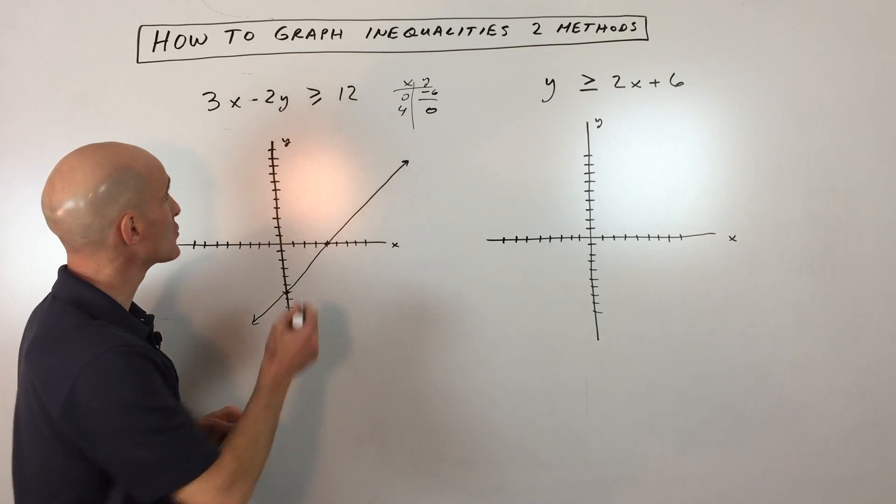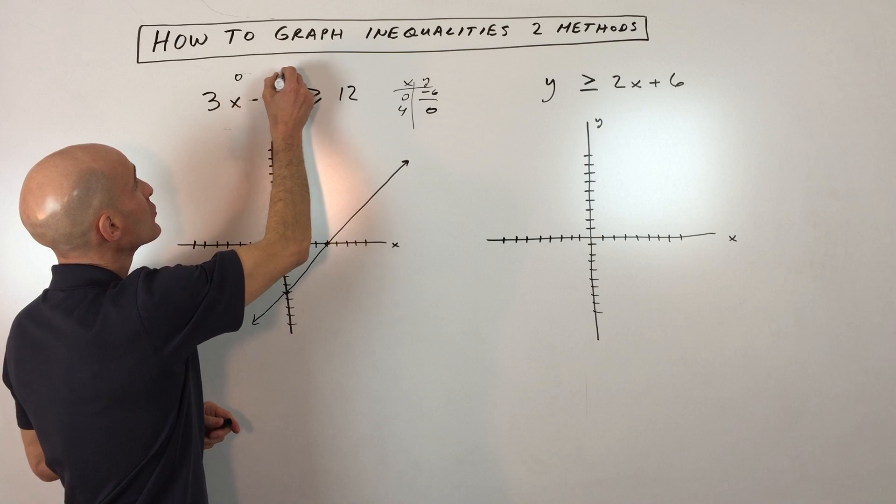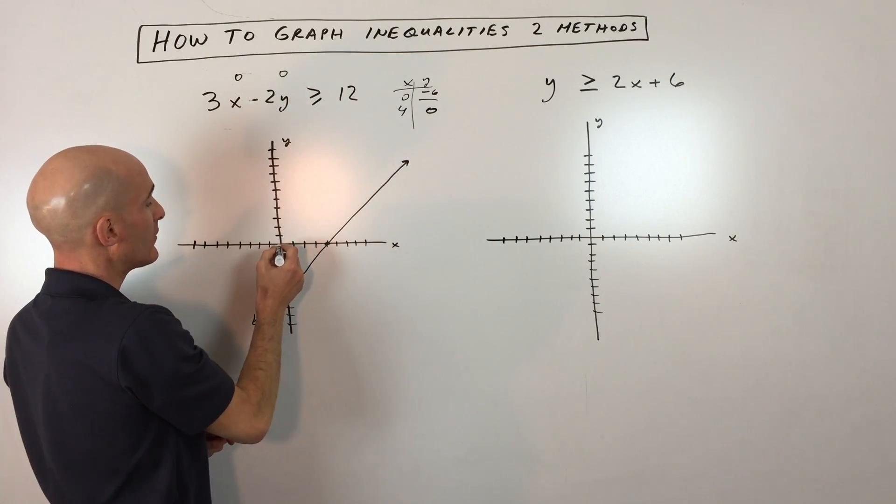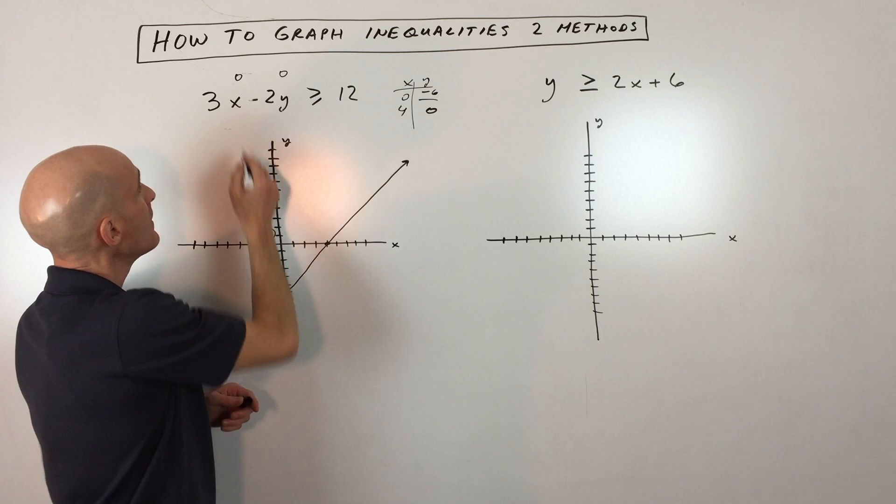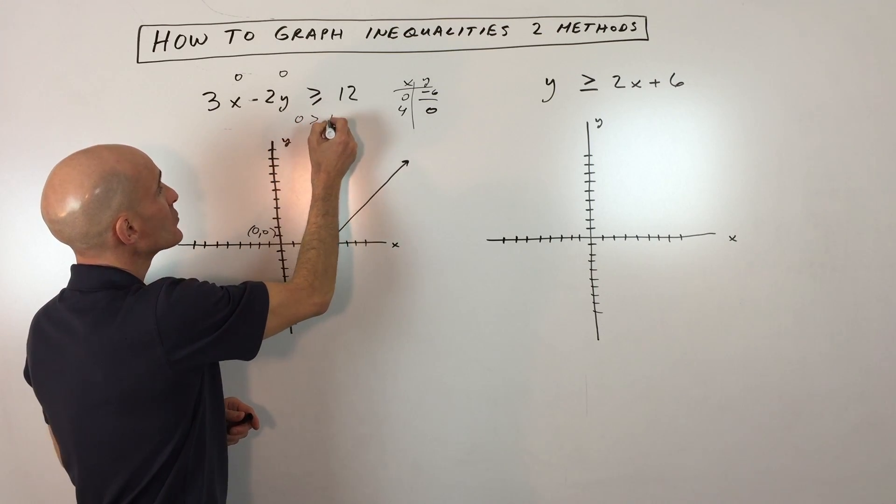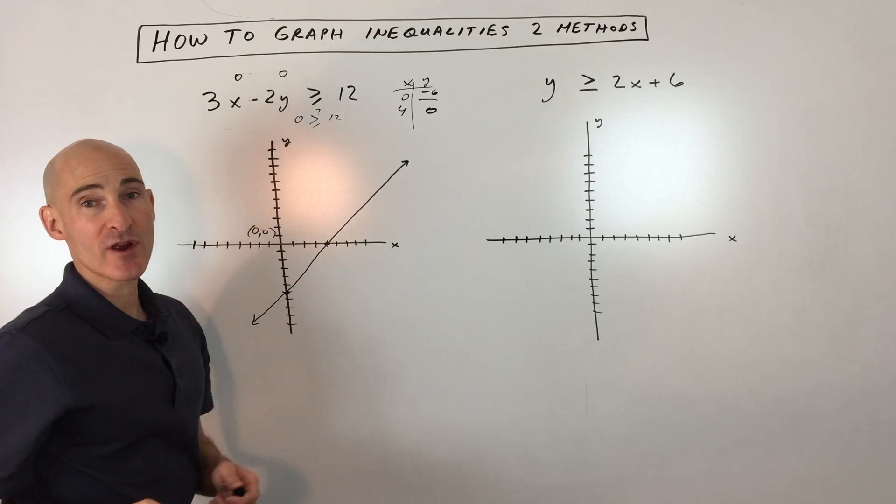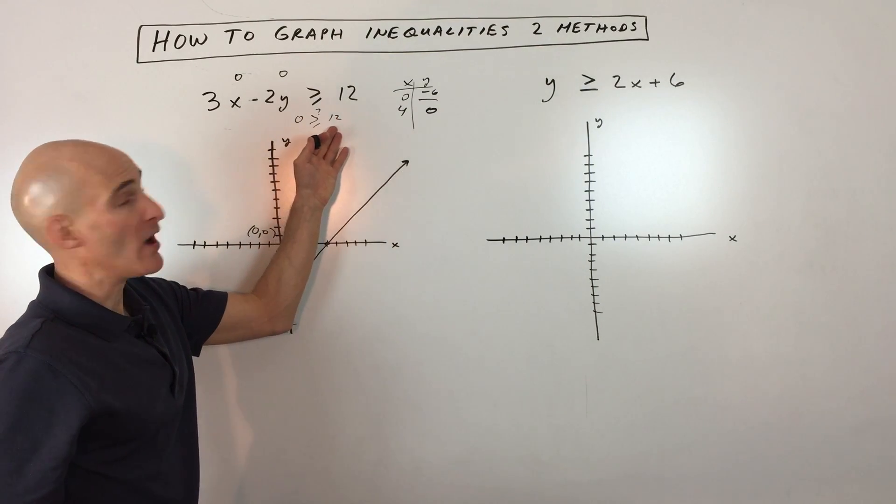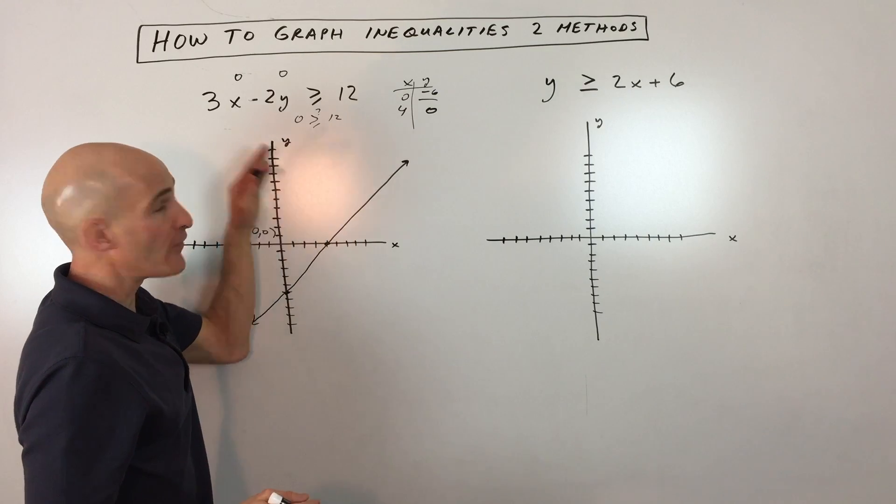Now a good point to pick is the origin, 0, 0. So if I put in 0 in for x and 0 in for y, okay, that's this point right here, 0, 0. This is going to be 0 minus 0, which is 0, and is 0 greater than or equal to 12, question mark? Well, 0 is not greater than or equal to 12, so that means this region over here is false.